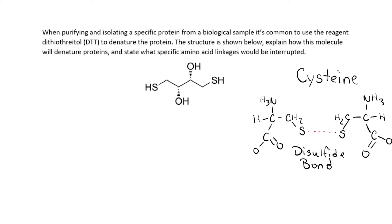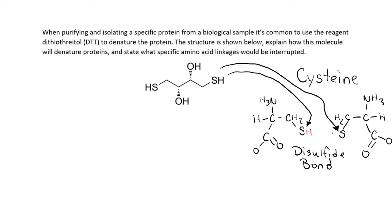Now, what happens is this molecule DTT will come in and interrupt this disulfide bond by donating hydrogens to each one of these sulfurs, reducing the disulfide bond. So instead of a disulfide bond, you will actually have a hydrogen on each sulfur, and that causes the protein to denature because those disulfide bonds were holding it in its shape.